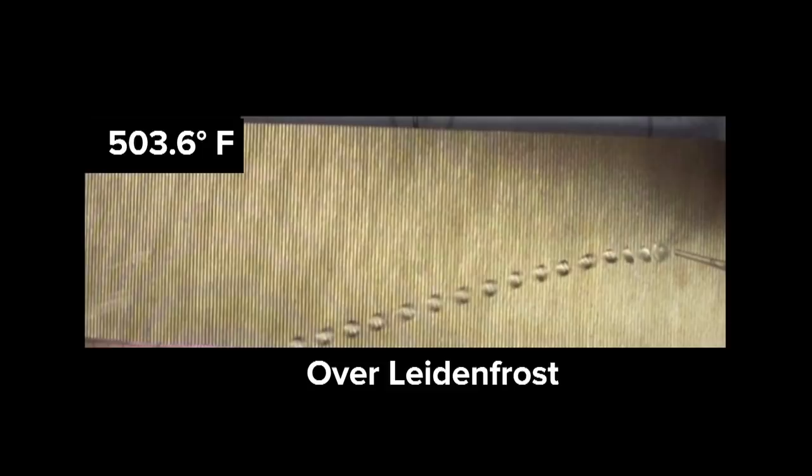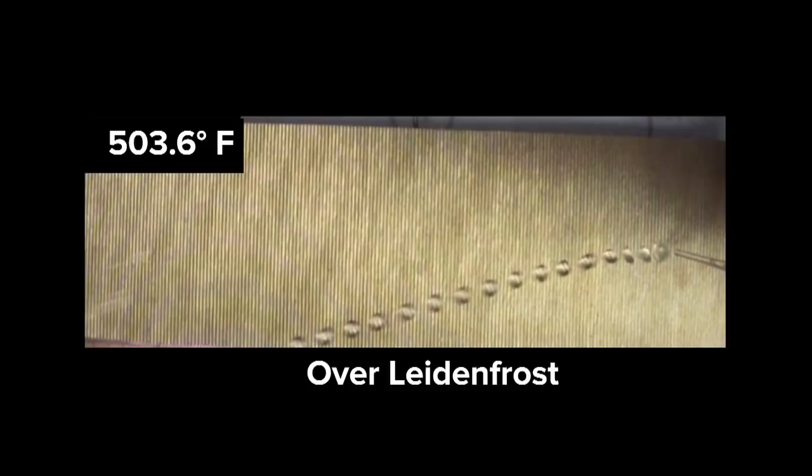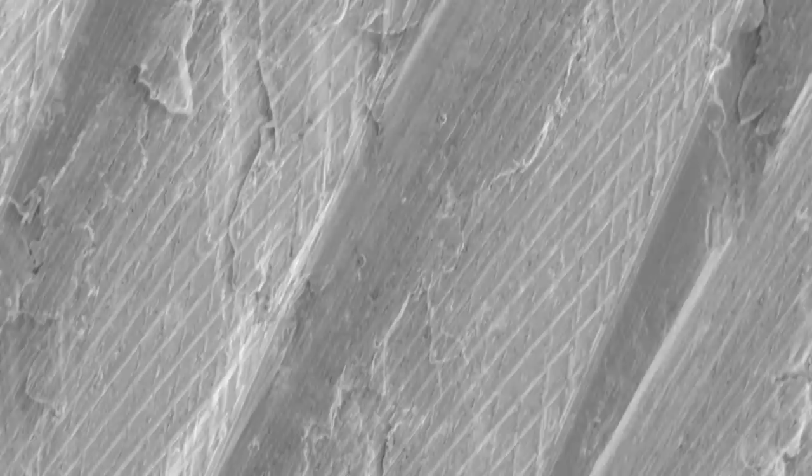When the surface was heated over the Leidenfrost point, the droplets curved to the left. If they were under, they veered to the right. There must be something in the structure of the surface. Upon magnifying the ridges, the team noticed that they had small grooves, which we think is responsible for the directionality.